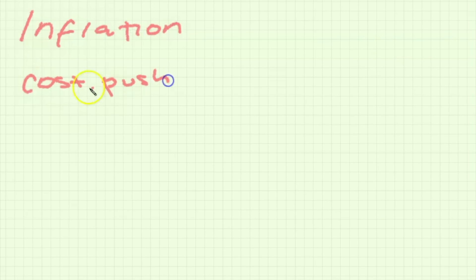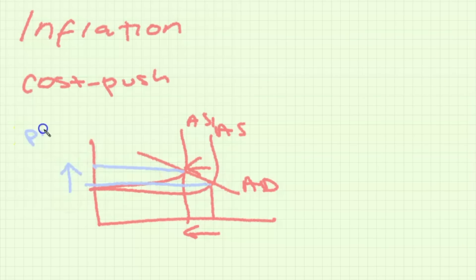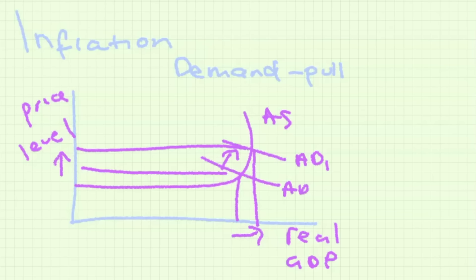Now for inflation. Inflation is always an increase in the price level but there are two different types. We have cost push inflation which is a result of AS shifting to the left and a decrease in real GDP at the same time. Then we also have demand pull inflation which is when AD increases and therefore price level also increases.